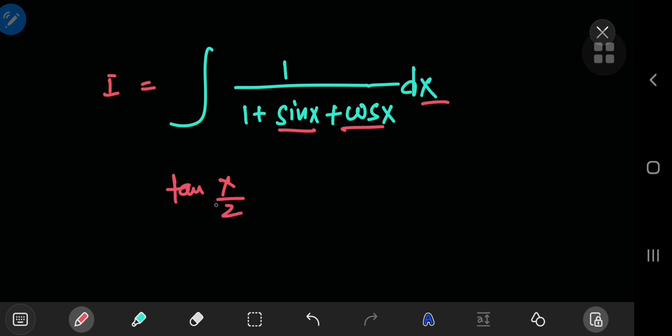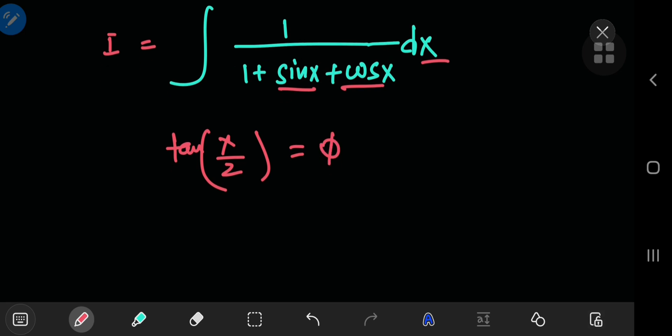You let it equal to some other variable—in this case let's call it phi. So the tangent of x by 2 equals phi. This is what we call the Weierstrass substitution, and this has some interesting consequences that can be derived using simple expressions that I will write down later.